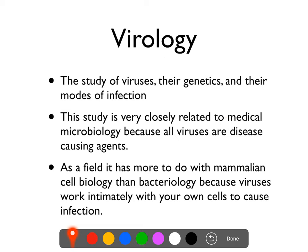Virology can also be very closely related to mammalian cell biology. In order for viruses to actually work — to have a life cycle — they have to get into your cells and manipulate them, using your cells' metabolism and machinery. Which means that to really understand how viruses work, you have to have a good understanding of how mammalian cells work, assuming you're studying mammalian viruses. Cell biology and virology are often more closely related than virology and bacteriology, unless you're studying a specific type of virus called a bacteriophage that infects bacteria.